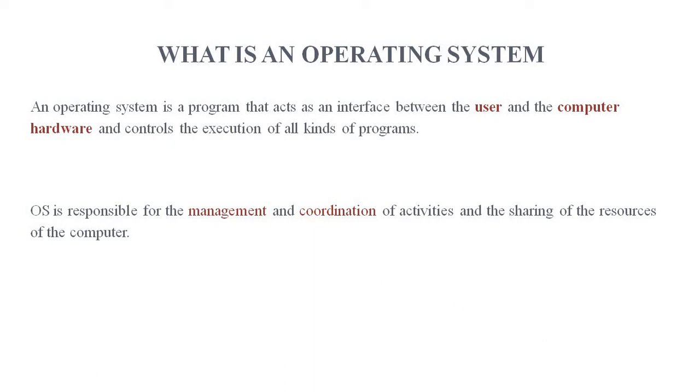Another main function of operating system is resource management. The operating system collects all the resources in the network environment and allocates the resources to requesting processes in an efficient manner. The operating system acts like a government. The government collects all the money from various resources like public sector, companies, taxes, etc. and distributes the money to different development activities. Same as the OS collects the resources from network environment or within a system and grants the resources to the requesting job.